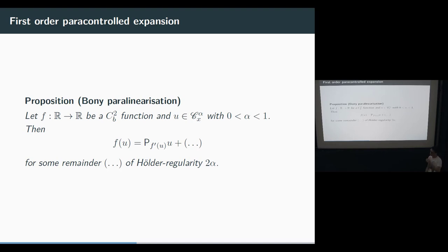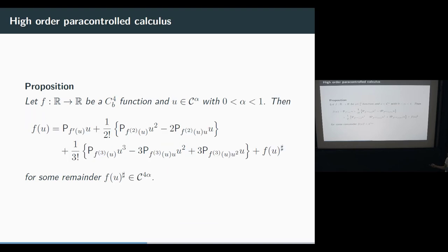Bony's paralinearization result says that in our setting, if f is smooth enough, f(u) looks like u locally — this is a first-order expansion of u, playing the role of the Taylor formula in regularity structures. We need higher-order expansions: at order 3, we have an expansion of the nonlinearity in terms of u, u-squared, and u-cubed. This basically tells us that to deal with a nonlinearity up to a remainder of regularity 4-alpha, we only need to study u, u-squared, and u-cubed.